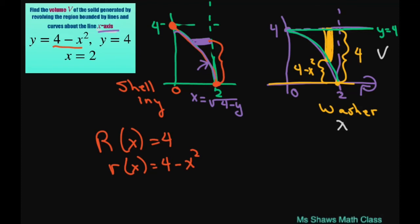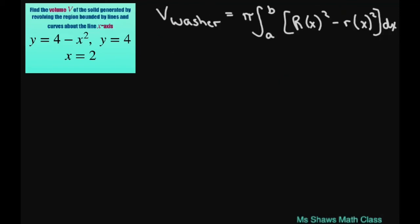Alright, so let's substitute in. We're going to get the volume equals, this is your formula for the washer method. Pi, and we're going from 0 to 2 on the x-axis with respect to x, and then r of x squared. So that's going to be 4 squared minus 4 minus x squared squared dx.